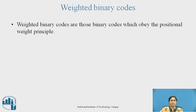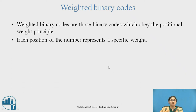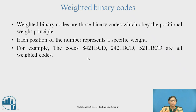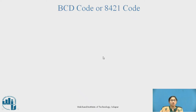Weighted Binary Codes. Weighted binary codes are those binary codes which obey the positional weight principle. Each position of the number represents a specific weight. For example, the codes 8421 BCD code, 2421 BCD code, and 5211 BCD code are all weighted codes. The commonly used code is the 8421 code.